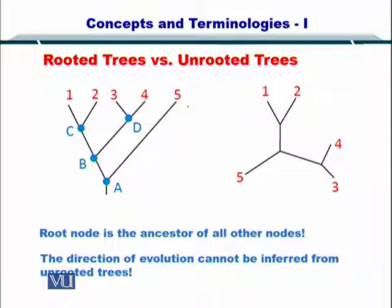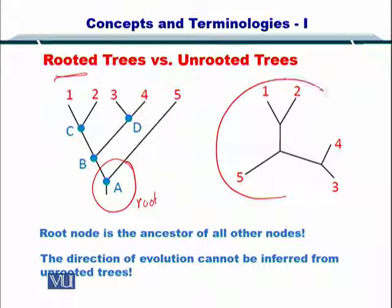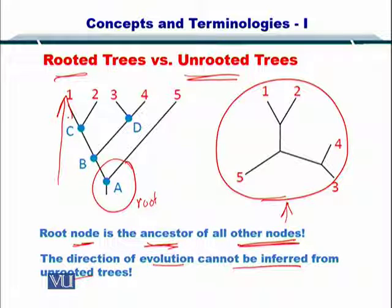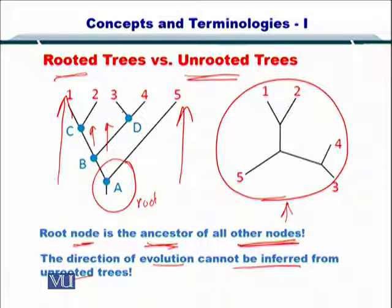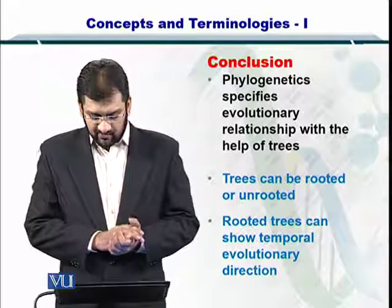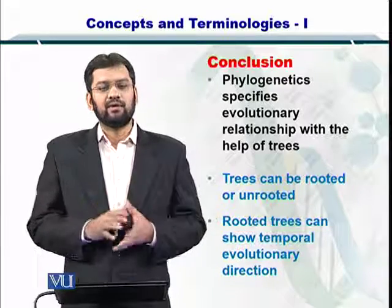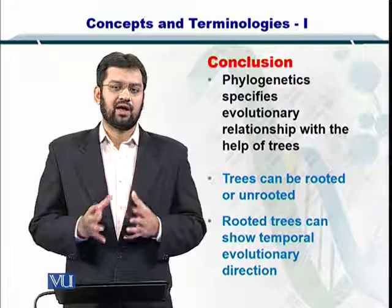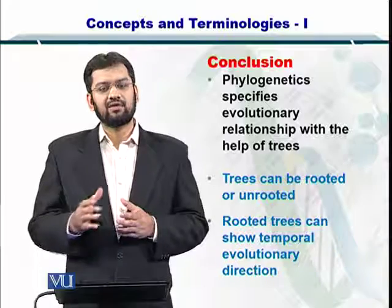In case of unrooted trees, A was the root in the rooted tree, but here there is no root. The root node is the ancestor of all other nodes, but this is not shown in an unrooted tree. Hence, the direction of evolution cannot be inferred from unrooted trees, which can obviously be seen in a rooted tree — because A evolved into B, and B evolved into C and D, and so on. In conclusion, phylogenetics specifies evolutionary relationship hierarchy within species, and the trees formed can be rooted or unrooted, with rooted trees showing the direction of evolution as well as time.